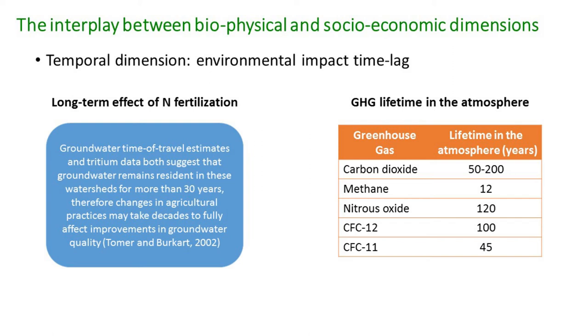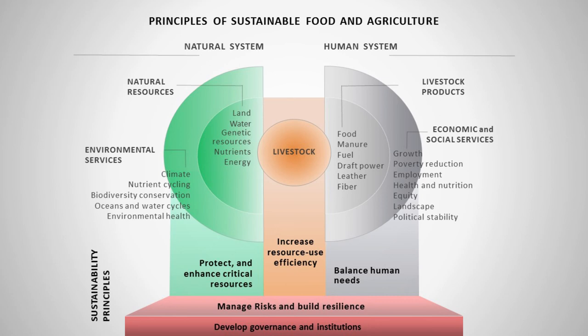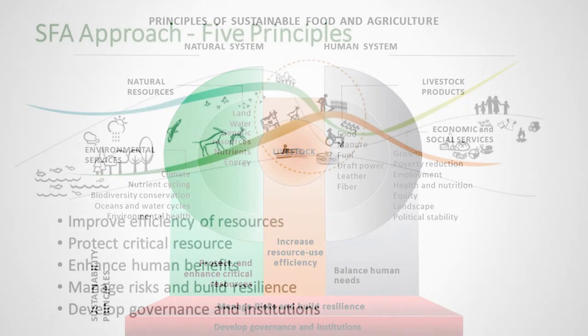Going back to FAO's original framework, in 2014 we derived five principles. First, look at resource use efficiency in how natural resources are transformed through livestock. Second, make extra effort to protect and enhance critical resources like forests, oceans, glaciers, and biodiversity habitats. Third, look at human needs for better distribution and enhancement of food and agriculture benefits. Fourth, manage risks and build resilience. Fifth, establish institutions and governance that support the entire system.